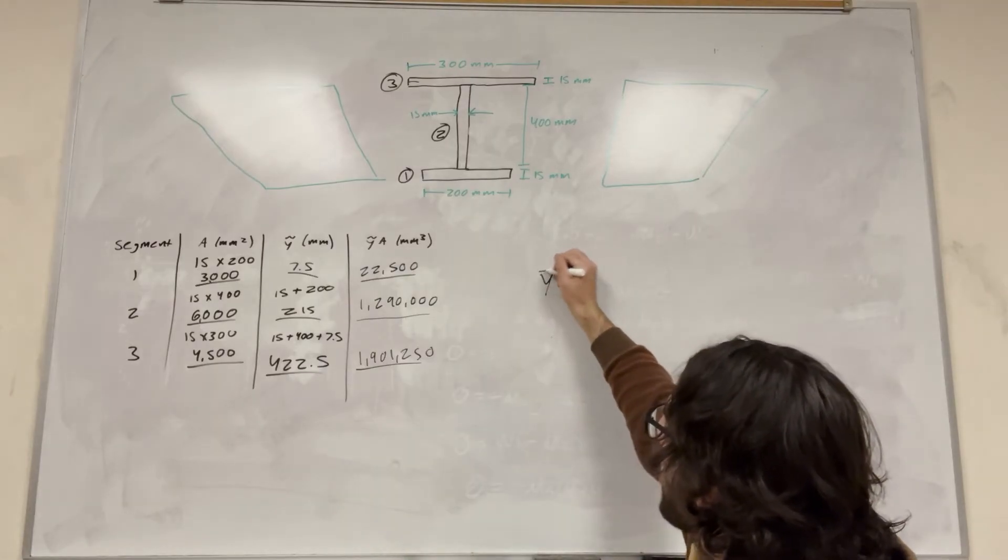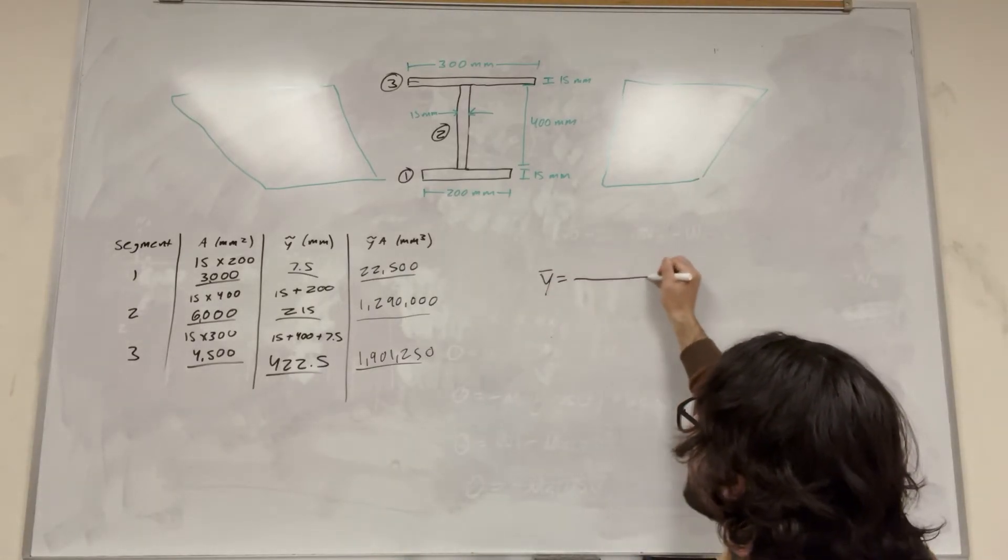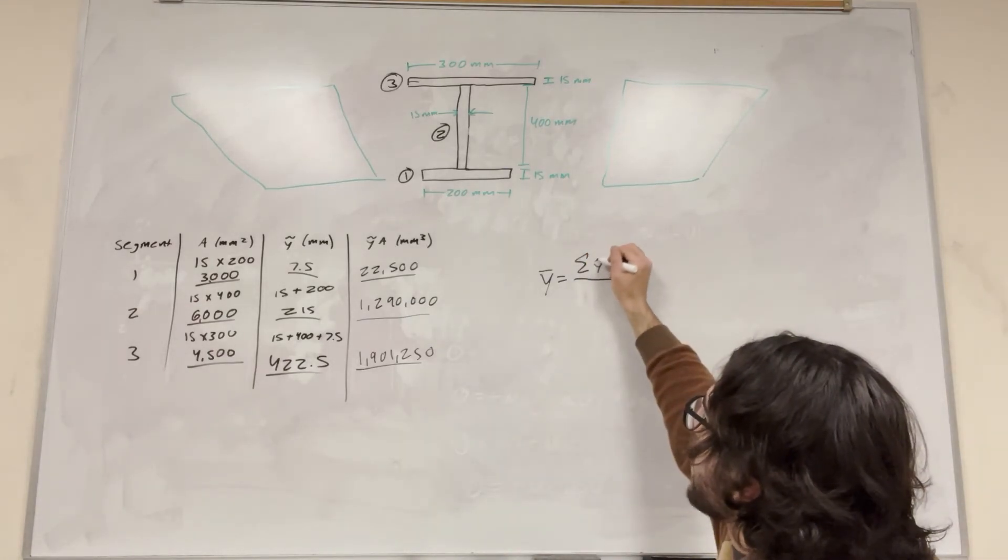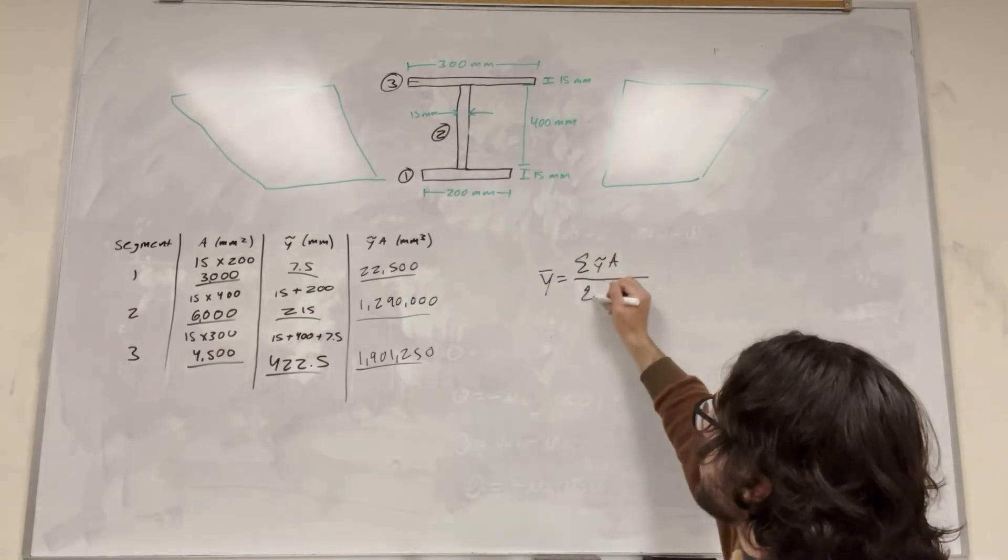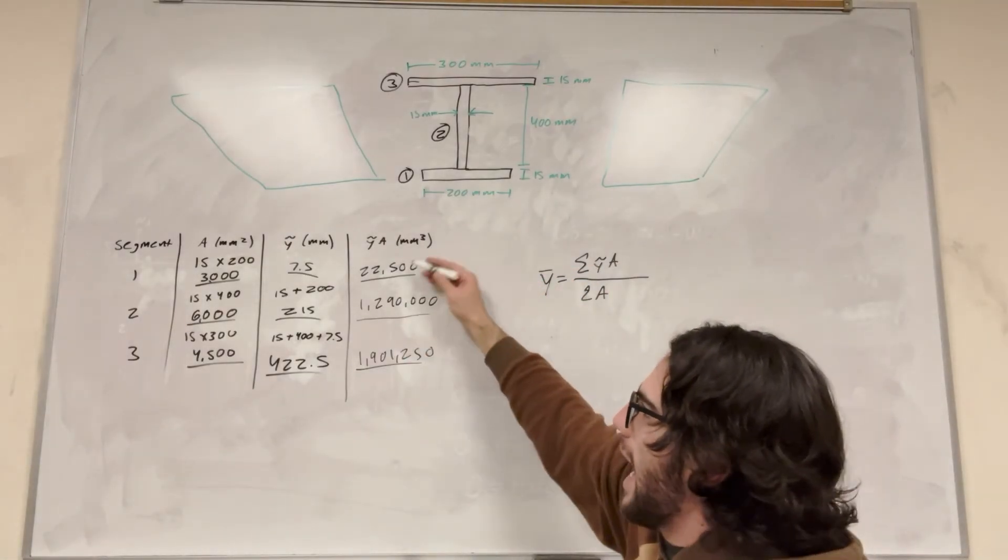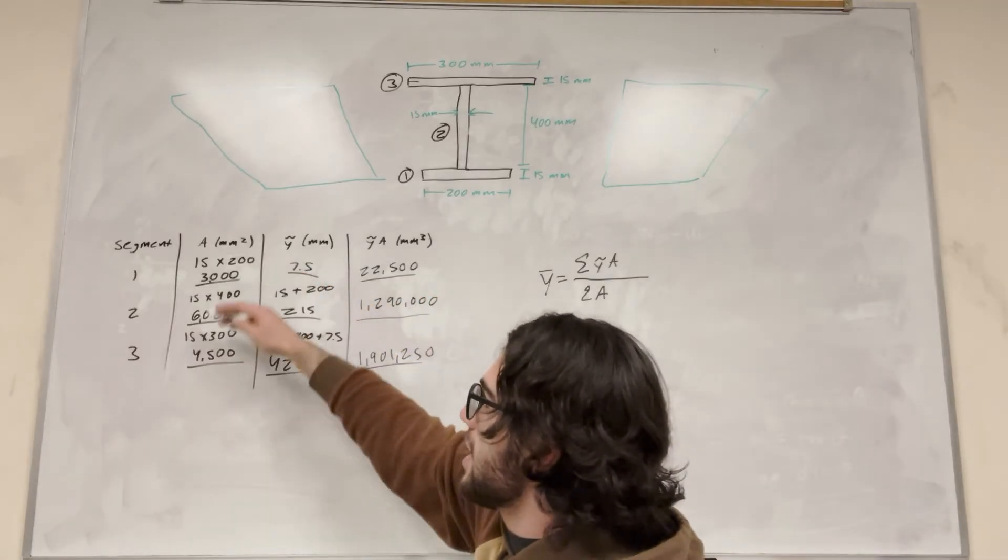So the equation for Y bar is a fraction. So on the top, we're doing sum of the Y tilde A's over the sum of the areas. All right, so this is why we found this last part, because we're just going to add these up and then divide by these being added up.